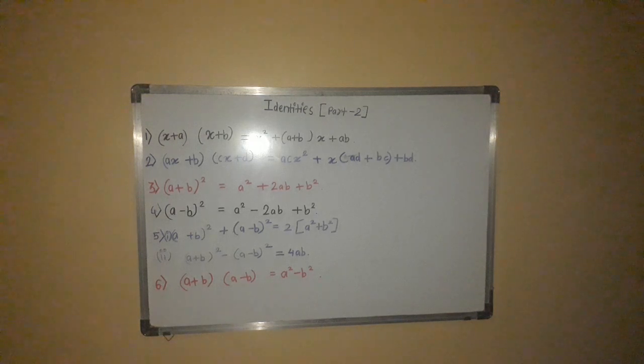First identity is of bracket X plus A bracket close bracket X plus B. Second identity is of bracket AX plus B bracket close bracket CX plus D bracket close.